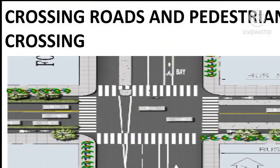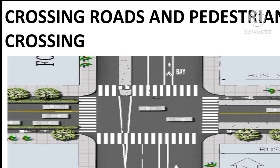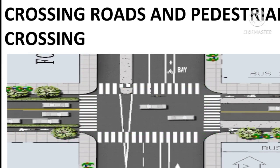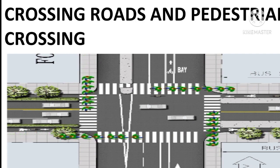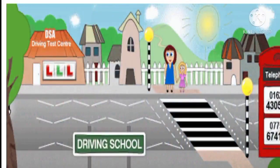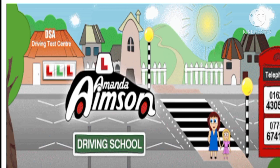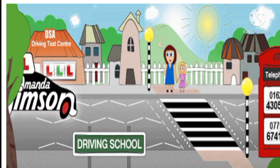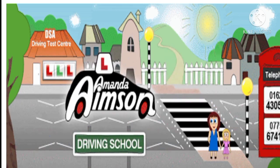Now let's see crossroads and pedestrian crossing. The pedestrian crossing was instituted in Britain in 1934. The roads were marked by dotted lines. On the pavement, there were striped Belisha beacon light poles, named after Britain's Minister of Transport, L. Hore-Belisha. The zebra crossing with black and white stripes was developed after the Second World War.